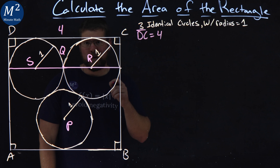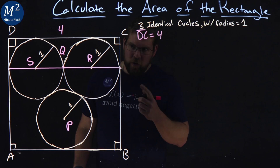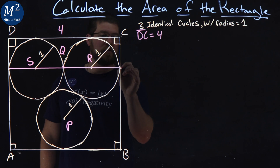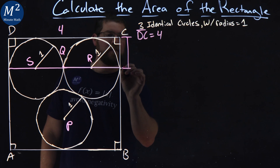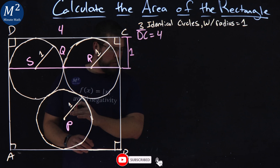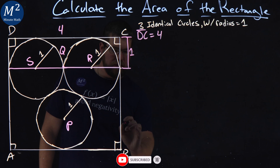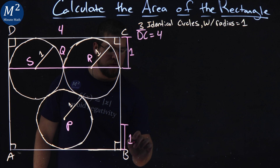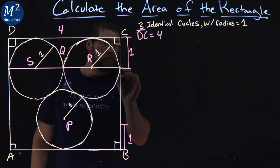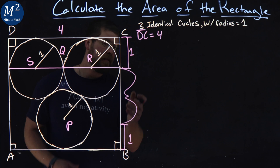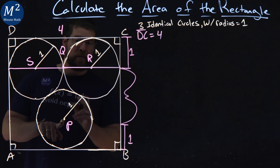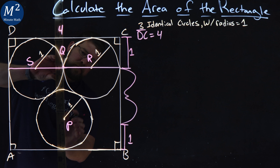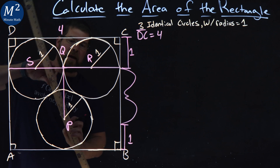We just have to find the other side length, and we're good to go — that's the tricky one. The radius is 1, which means up and down, the radius is 1. That tells us that C to this point has a length of 1. If we draw another line across, the same thing applies, so we have a 1 there too. What we really need to find is this missing length, which is the length of PQ.